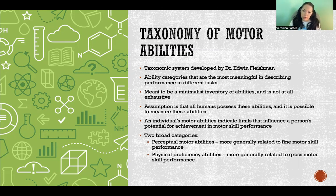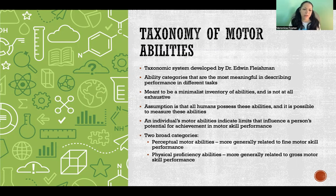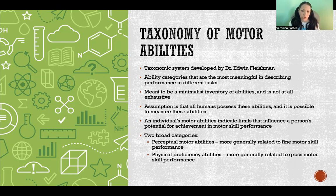The assumption is that all humans have these abilities and it is possible to measure them. An individual's motor abilities indicate limits that influence a person's potential for achievement in motor skill performance. If we can identify the motor abilities required for a skill and work to improve them, that will increase that person's potential for achievement.